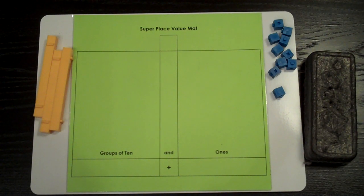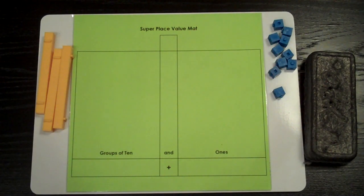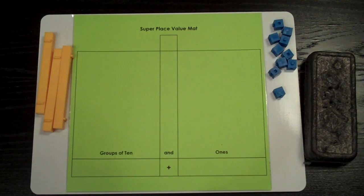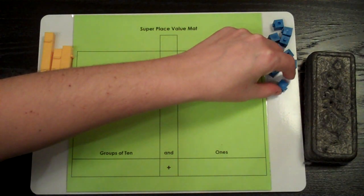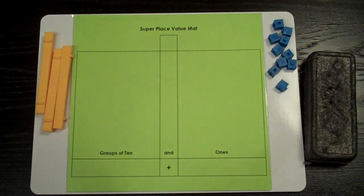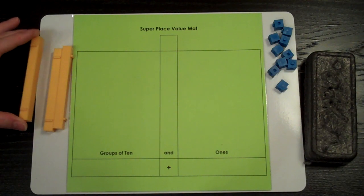To show numbers on a place value mat, we can use base 10 materials. Let's review the names for each manipulative. These are units. They represent ones. These are tens rods, or tens for short.